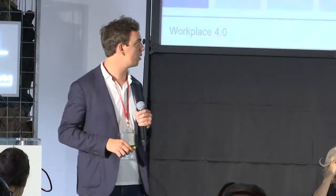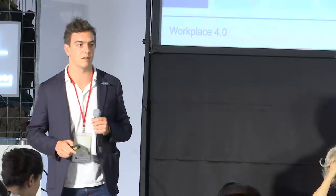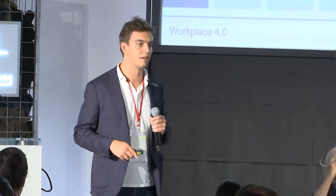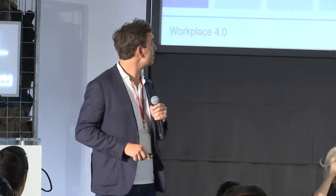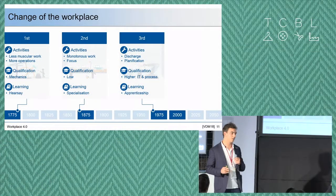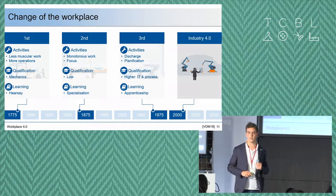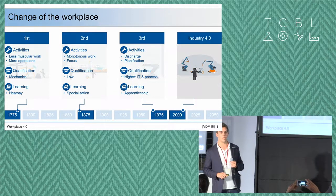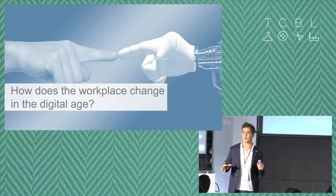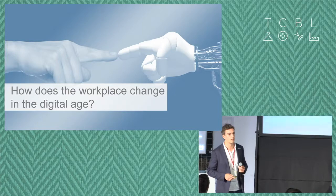Summarizing Industry 4.0, it's about putting digital applications in production and the integration of artificial intelligence. Our workers will also need to have a new skill set. We will talk about activities, qualification, and learning for the first, second, and third industrial revolution — and we will have to see what the fourth industrial revolution will tell us about these new activities, qualifications, and learnings. My major question is: how does our work in the textile business change in the digital age?